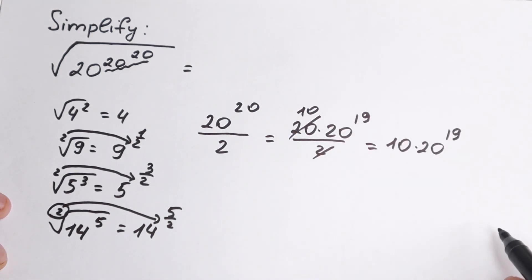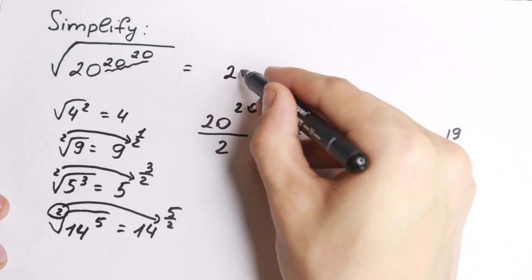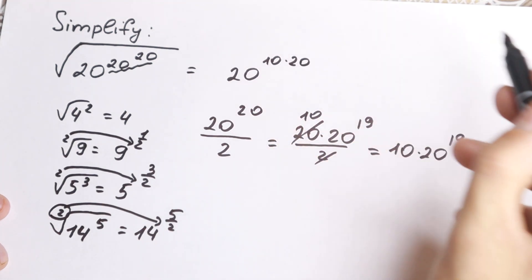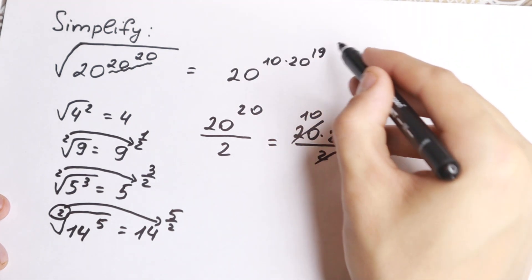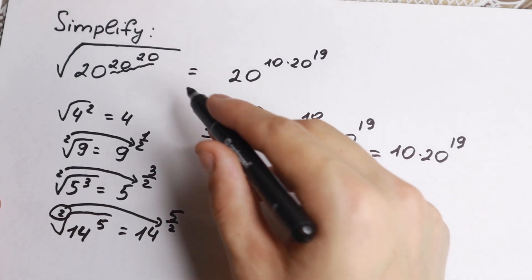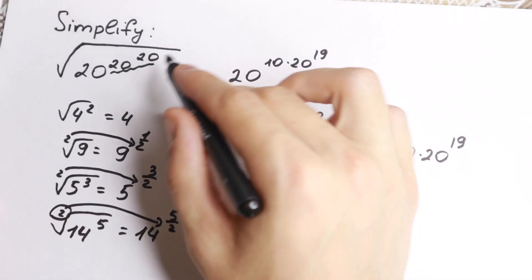And it looks like our answer, because this is equal to 20 to the power 10 times 20 to the power 19. Of course we can simplify this a little bit, but I want to show you this approach, because a lot of students divide their 20 by 2.